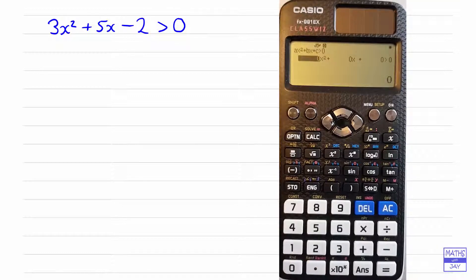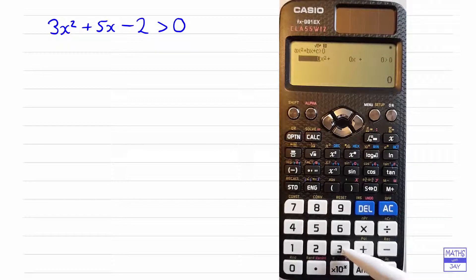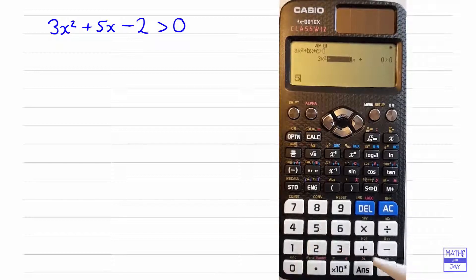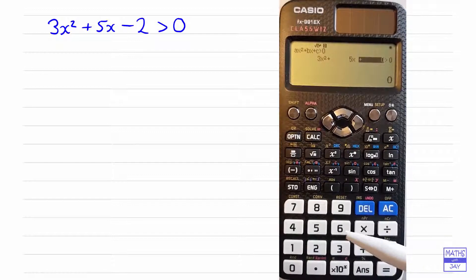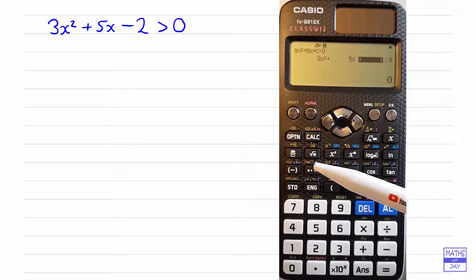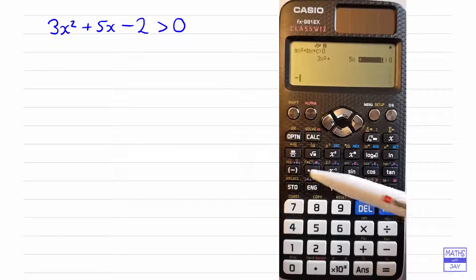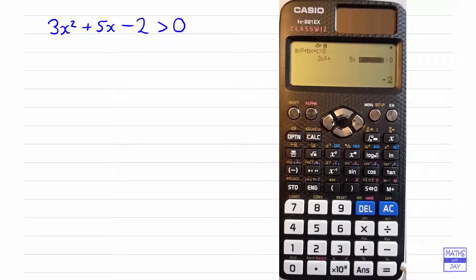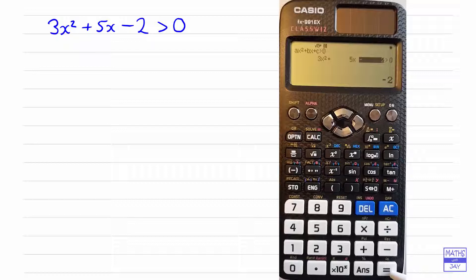And then all we need to do is key in the relevant numbers. So we've got a 3 multiplying the x squared, so we key in 3 and equals, and then the next one is 5 equals, and then we've got minus 2, so I would use the little negative there and 2 and equals, and that's input the inequality. And then all you need to do is to press equals and that will give you the answer.